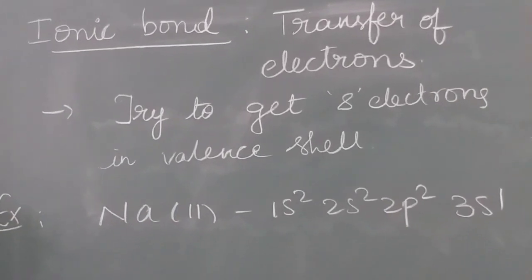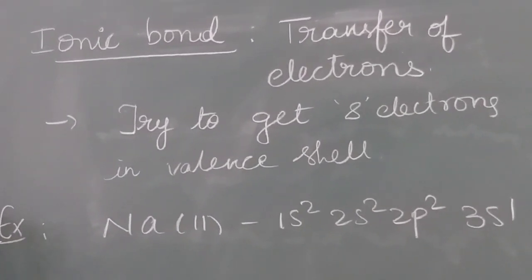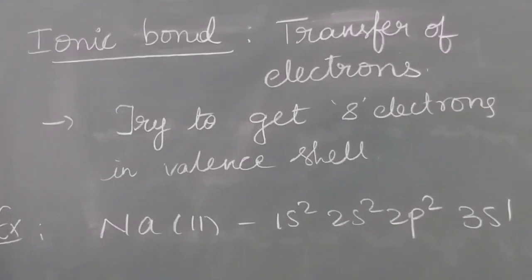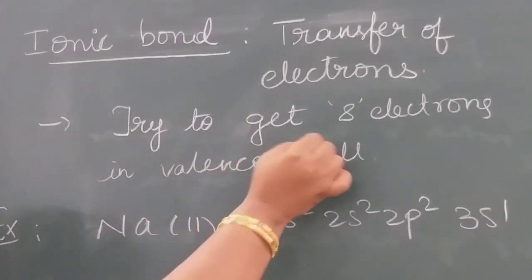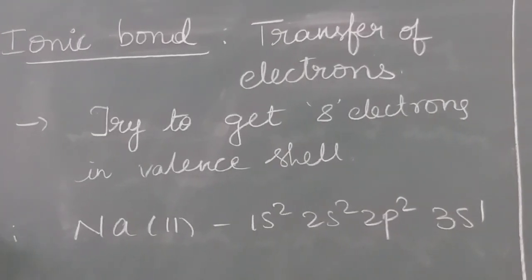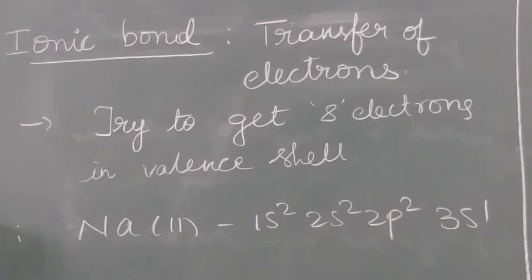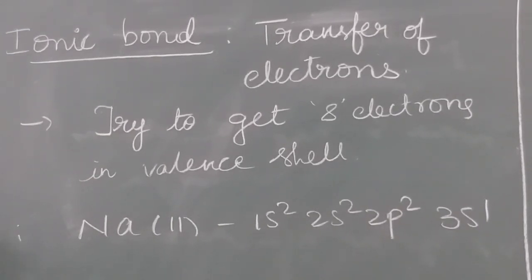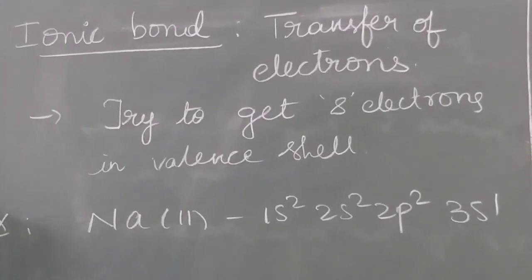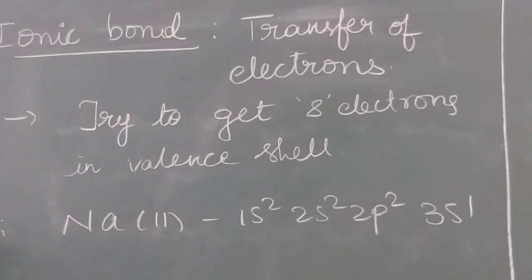Ionic bond means the chemical bond which is formed due to transfer of electrons. Transfer of electrons means one atom gives an electron to the other atom. Why? To get 8 electrons in the valence shell. One atom gives an electron to achieve the octet, and the other atom takes that electron to also get 8 electrons in the valence shell. Atoms are trying to get stability by achieving the octet.